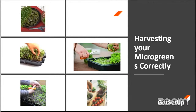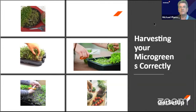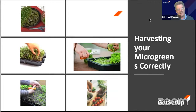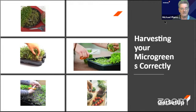Looking at the images: you can see sharp scissors being used, holding the microgreens and cutting cleanly. You can use either a knife or scissors. You can see some green left behind after cutting — that's going to have another crop from the same tray.